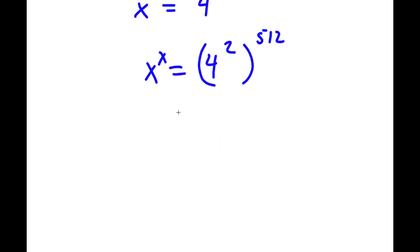And 4 to the power of 2 is simply equal to 16. So now I have x to the power of x is equal to 16 to the power of 512.